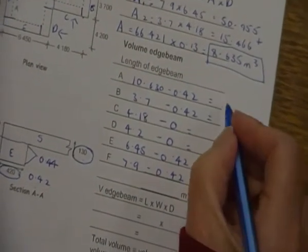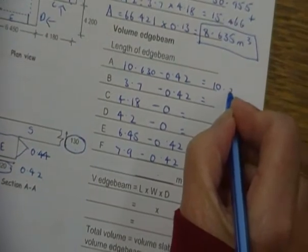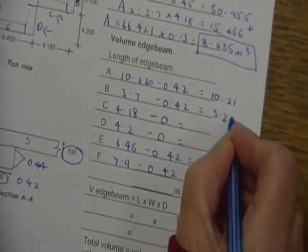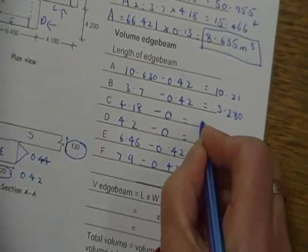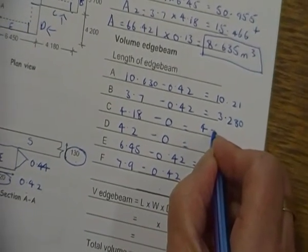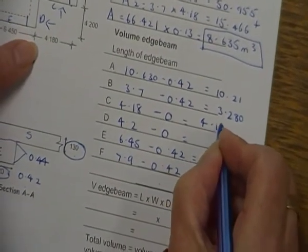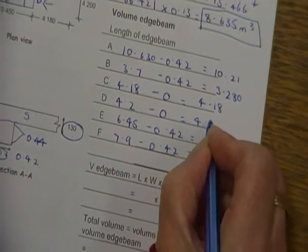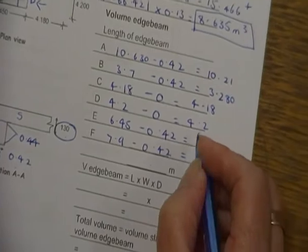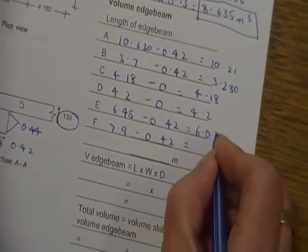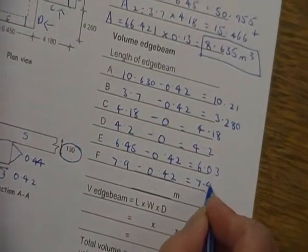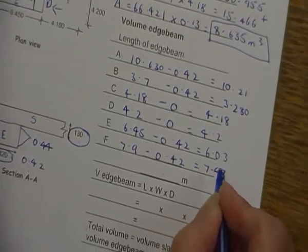We'll just wait a moment and find out the length of the footing. So I'll go through: A is 10.21, B is 3.28, C is 0, and this one is going to be 4.0. C I've got as 4.18 and D is 4.2.